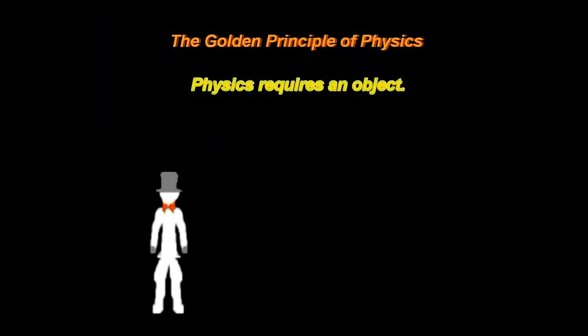The non-negotiable golden principle of physics is that you can't do physics without an object.